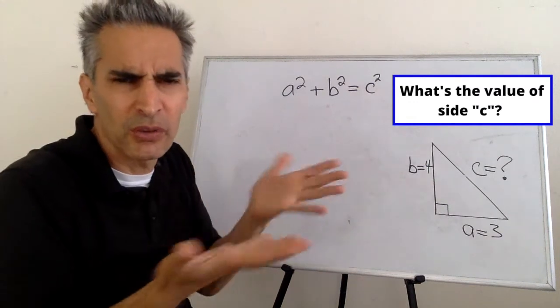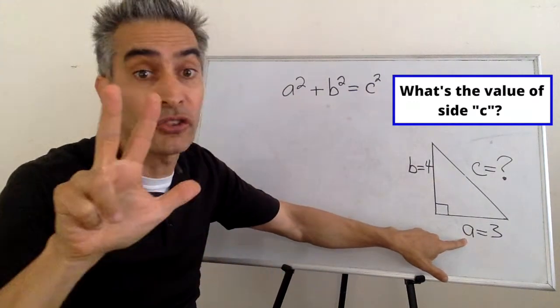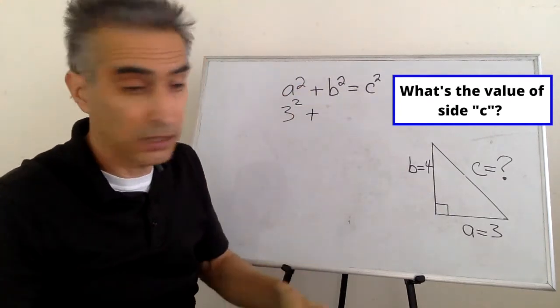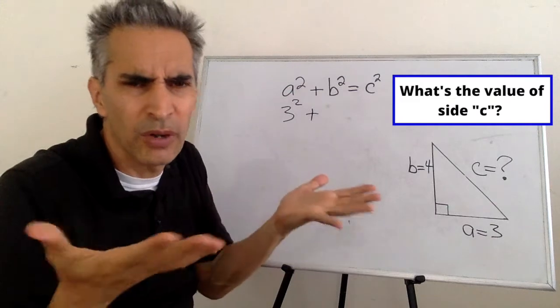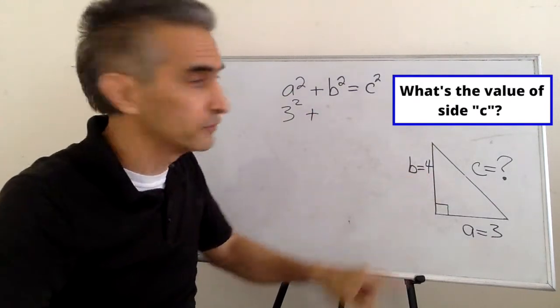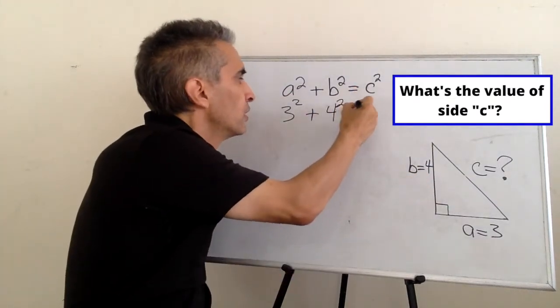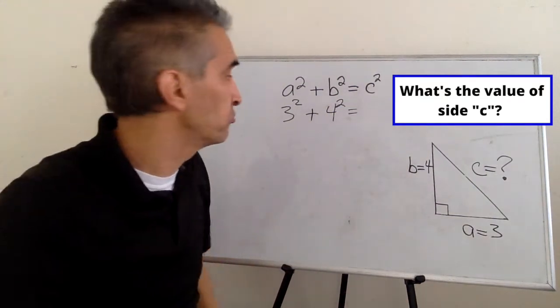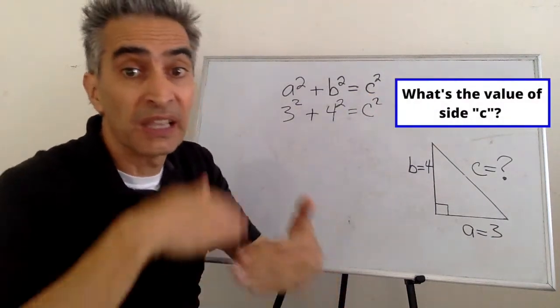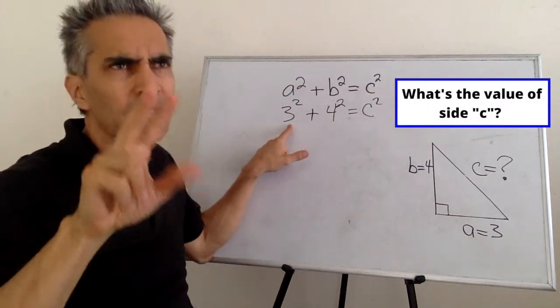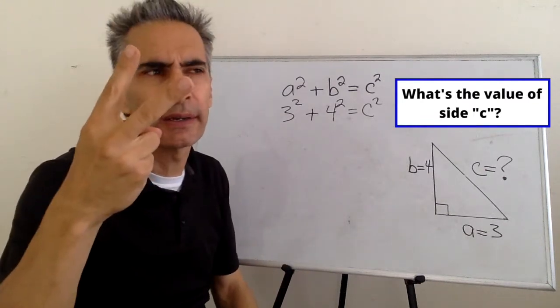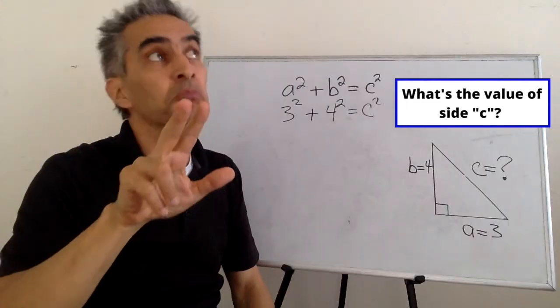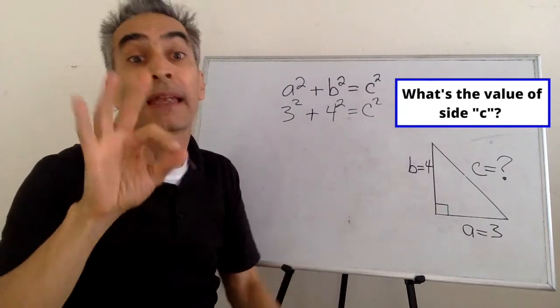How do we use the Pythagorean Theorem? A becomes 3, and B gets replaced with 4. C, we're not really sure what that is, so it's going to stay at C squared. Next, 3 squared. 3 squared means 3 times 3. 3 times 3 equals 9.